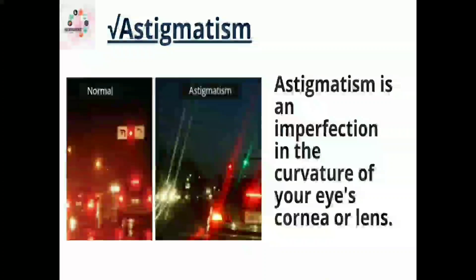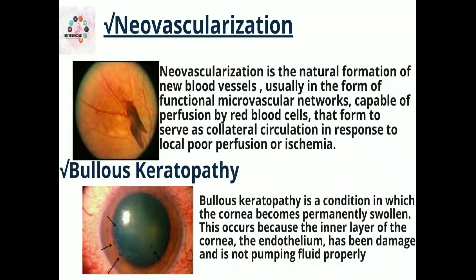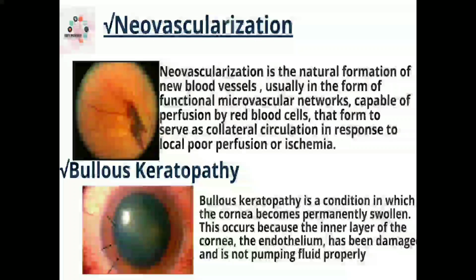Next we have neovascularization — the natural formation of new blood vessels, as you can see in the picture, usually in the form of functional microvascular networks capable of perfusion by red blood cells, forming to serve as collateral circulation in response to local poor perfusion or ischemia.